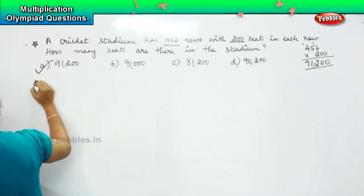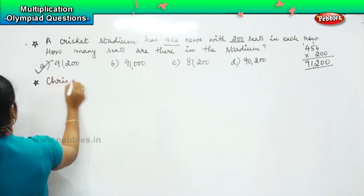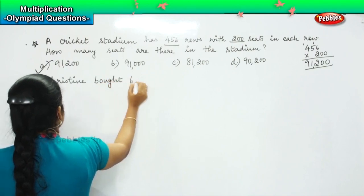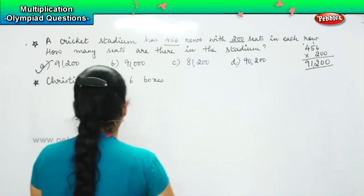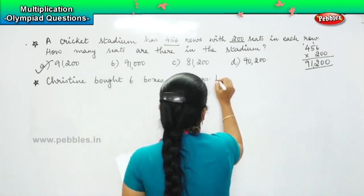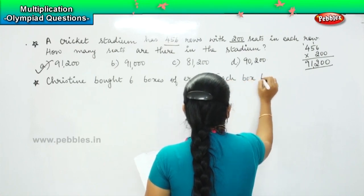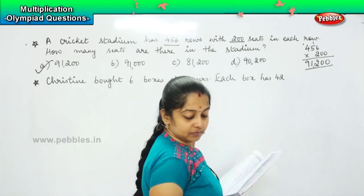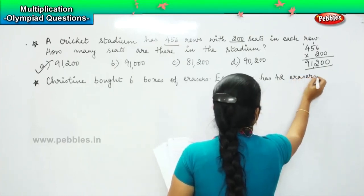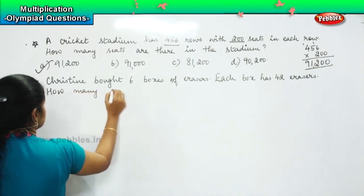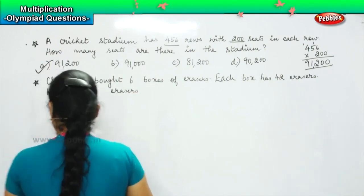Here is your next question. The question says: Christine bought six boxes of erasers. Each box has 42 erasers. How many erasers does Christine have?